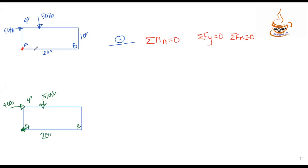For the roller support, the reaction acts perpendicular to the inclined surface. At the hinge, we can have both horizontal and vertical components. The reaction at B has components: By (vertical, upward) and Bx (horizontal), because the hinge resists both horizontal and vertical forces.